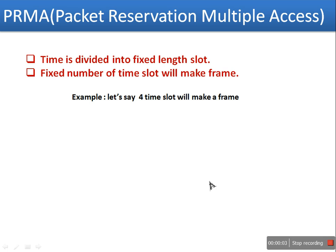Hello everyone. In this video I will explain Packet Reservation Multiple Access. This is a protocol that falls under Demand Assigned Multiple Access, short form DAMA. This protocol is used for the MAC problem — medium access control — when we have a single channel but the number of users is more than one. PRMA is a demand-based protocol, meaning whenever a node wants to send something, that node will send a request for reservation. If that reservation is granted, next time that node will send the data in that reserved slot.